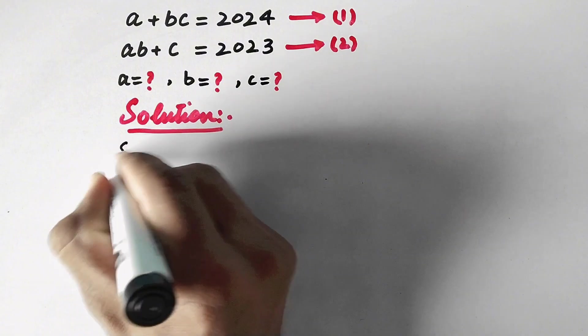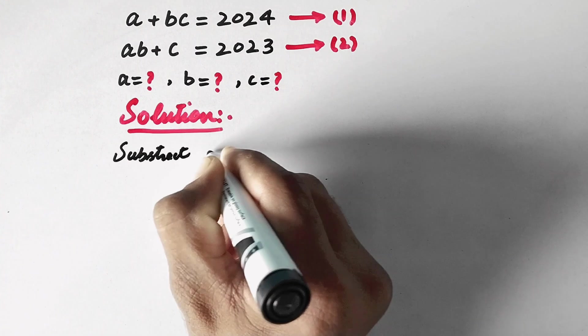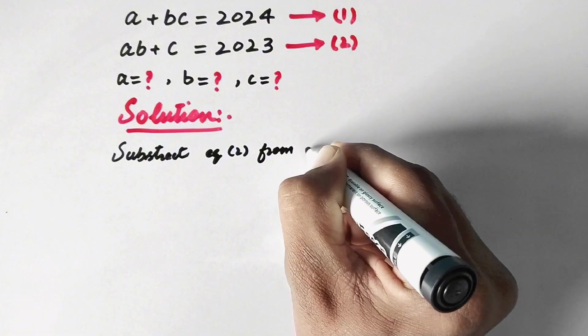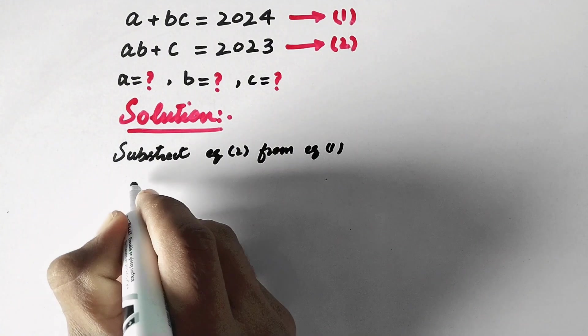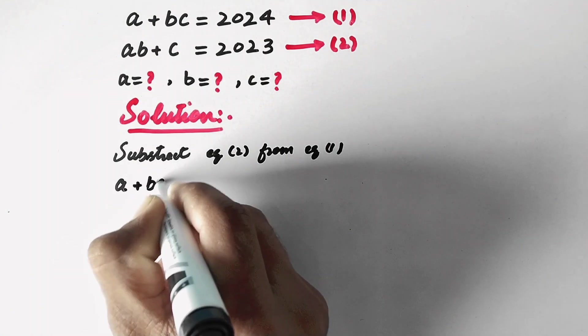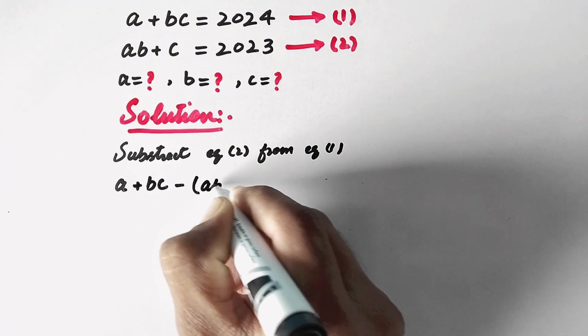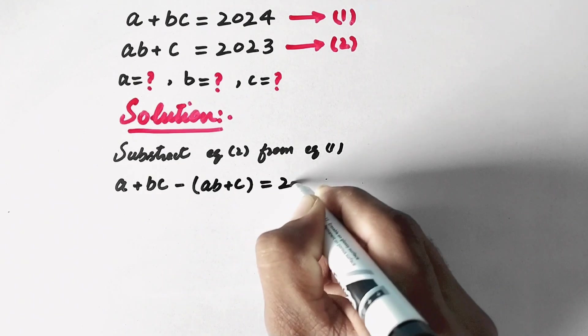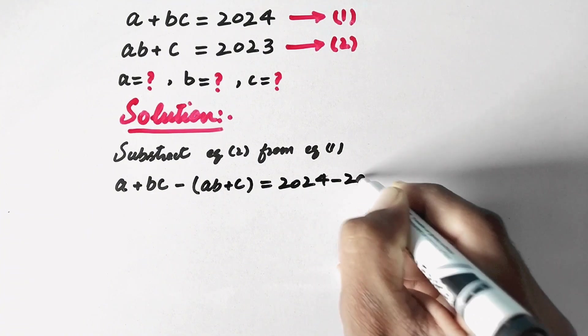we will subtract equation 2 from equation 1. Then it will be A plus BC minus AB plus C equals 2024 minus 2023.